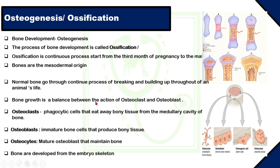Normally, bones continuously break and build throughout the life of the animal. This means bone growth is a balance between the action of osteoclasts and osteoblasts. Osteoclasts are phagocyte cells that eat away bony tissue from the medullary cavity of bones. Osteoblasts are immature bone cells that produce bony tissue. Osteocytes are the mature osteoblasts that maintain the bone. So osteoclasts continuously break bony tissue, whereas osteoblasts continuously build or heal the bony tissue.